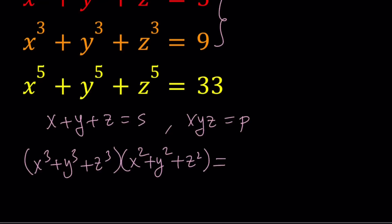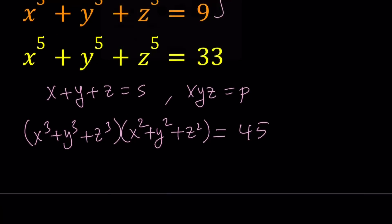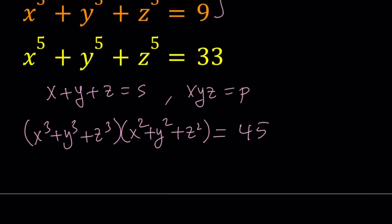And that's going to give me 45. Let's go ahead and distribute. One thing to notice when we distribute, we're going to be getting terms like x to the fifth, y to the fifth, and z to the fifth, but also something like x cubed times y squared, y cubed times z squared, so on and so forth.